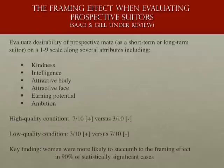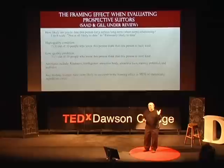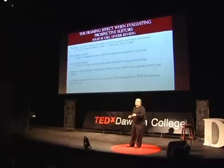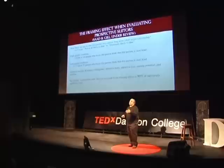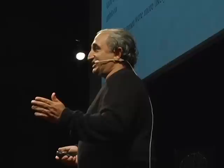Continuing with the mating theme: recall the 90% fat-free versus 10% fat framing example. We applied this same framing manipulation in the mating context — telling men and women that 7 out of 10 of a suitor's friends think he's intelligent, versus 3 out of 10 don't think he's intelligent. We applied this across attributes like kindness, intelligence, attractiveness, and earning potential. Women succumbed far more to the framing effect, because negatively valenced information in the mating domain looms much larger in women's psychology. Again, this finding would not have emerged without awareness of these basic evolutionary principles.